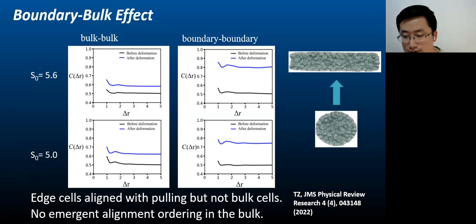This difference emerges in the solid-like system with target shape index S naught equals 5.0 as well. However, the distance in spatial correlation in alignment among the cells in the bulk and among the cells in the boundary is not as large.